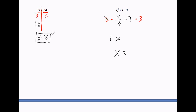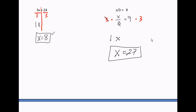Once again, three divided by three equals one, with an x — and another way of saying one x is just x. The one in front of it is invisible. On the right-hand side, since I multiplied the left side by three, I'm going to multiply the right side by three. Nine times three is 27. My answer is x equals 27.